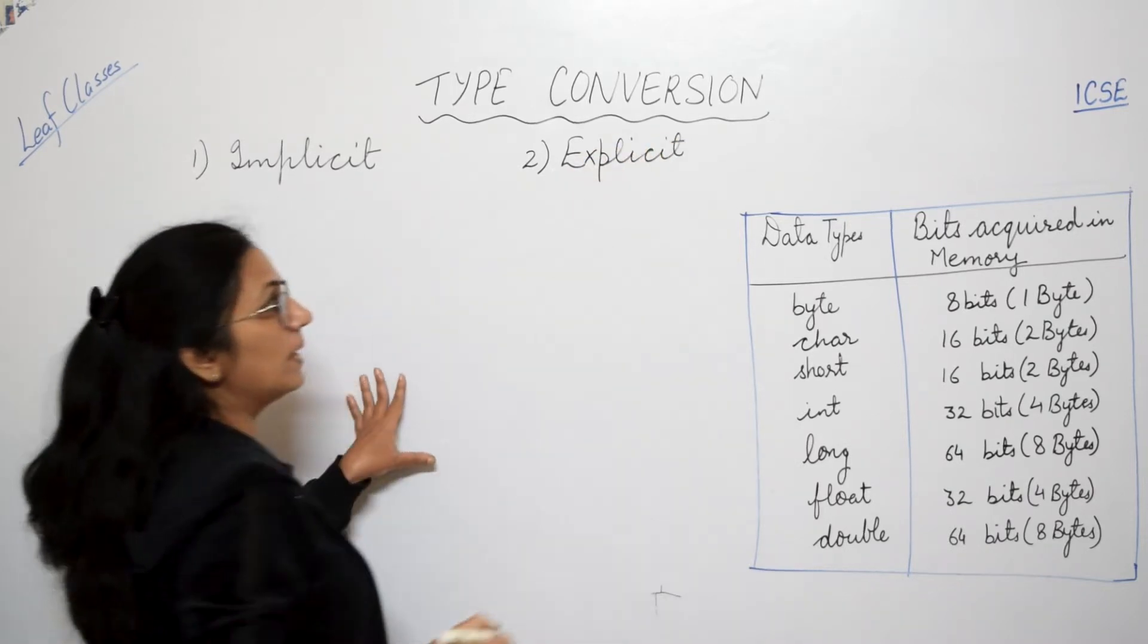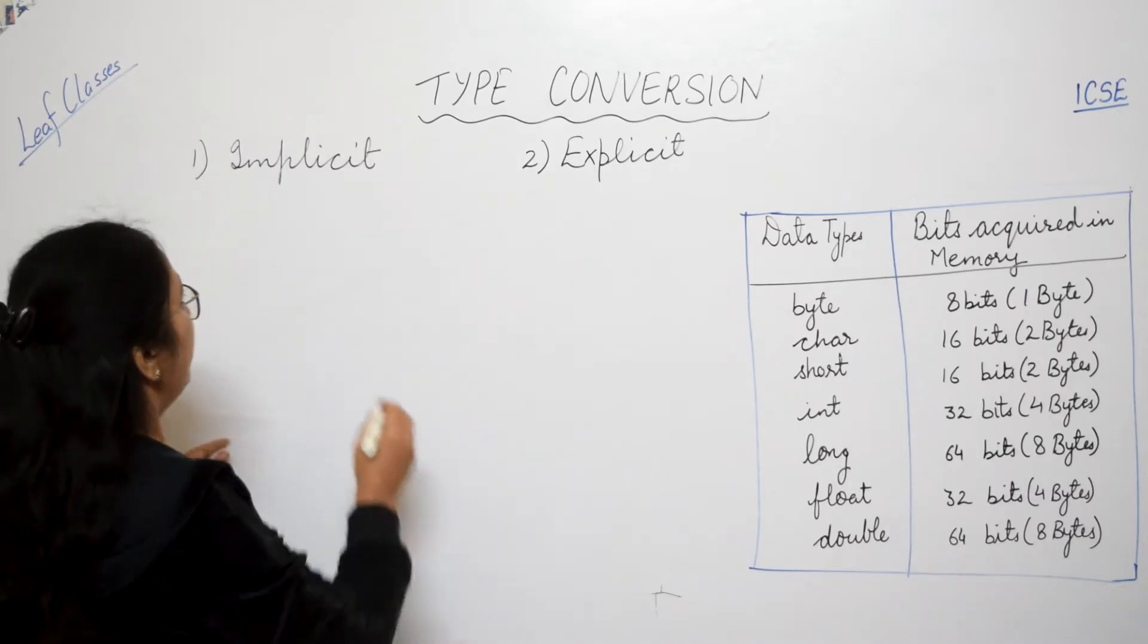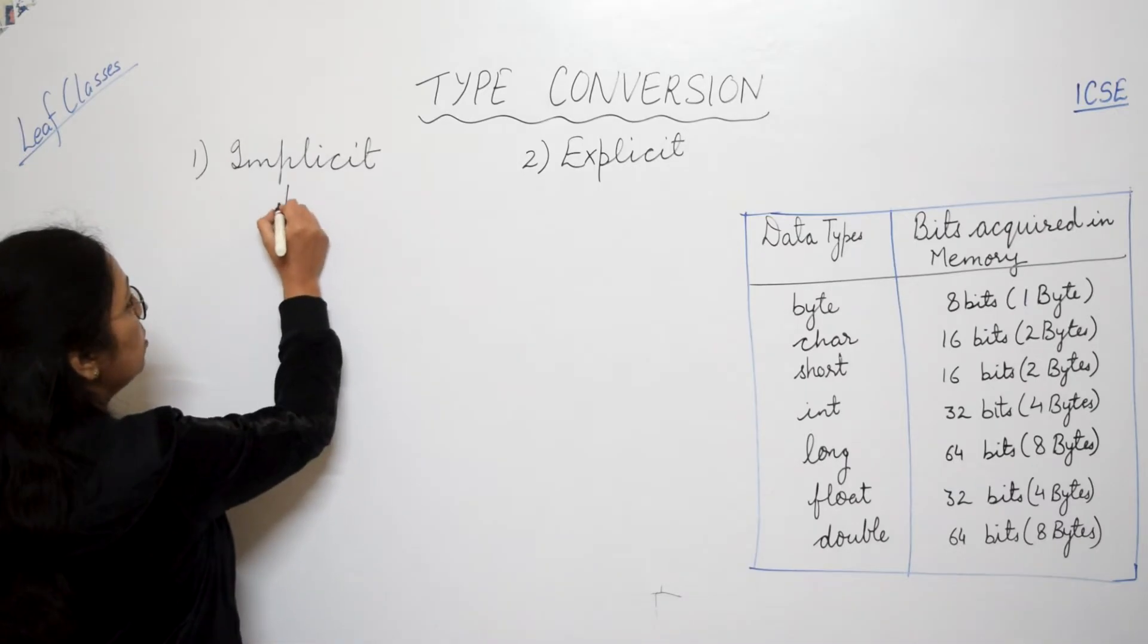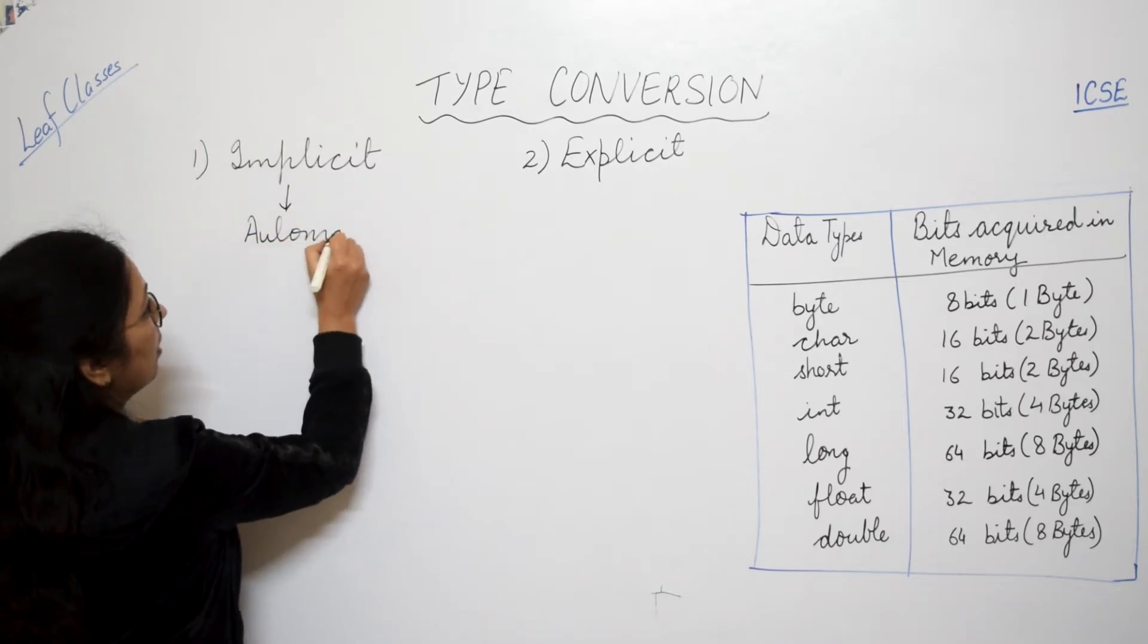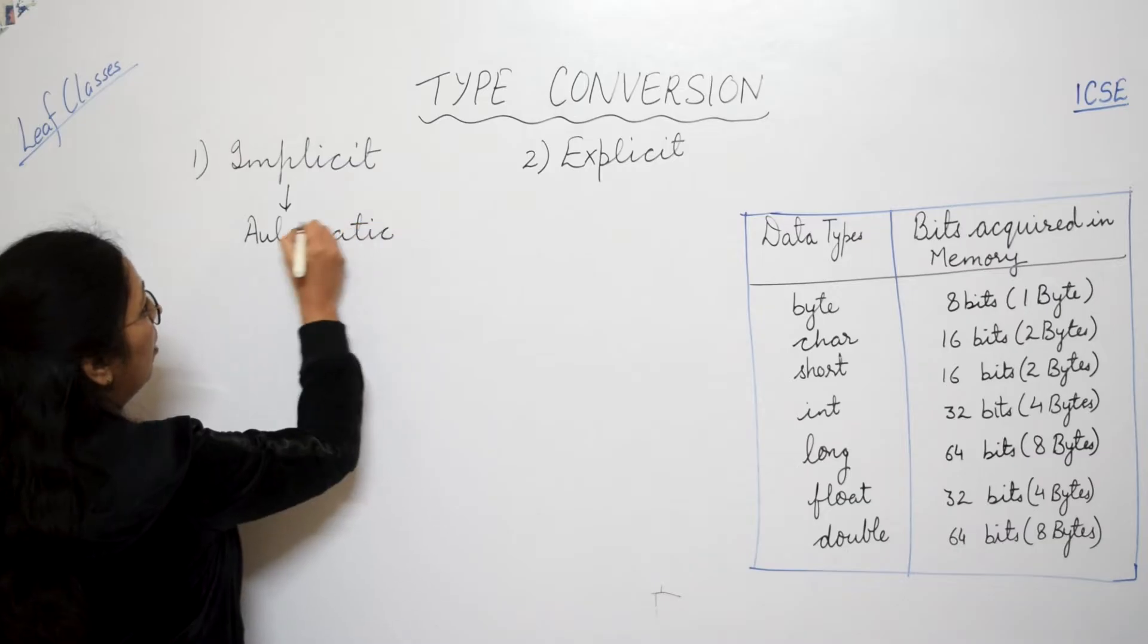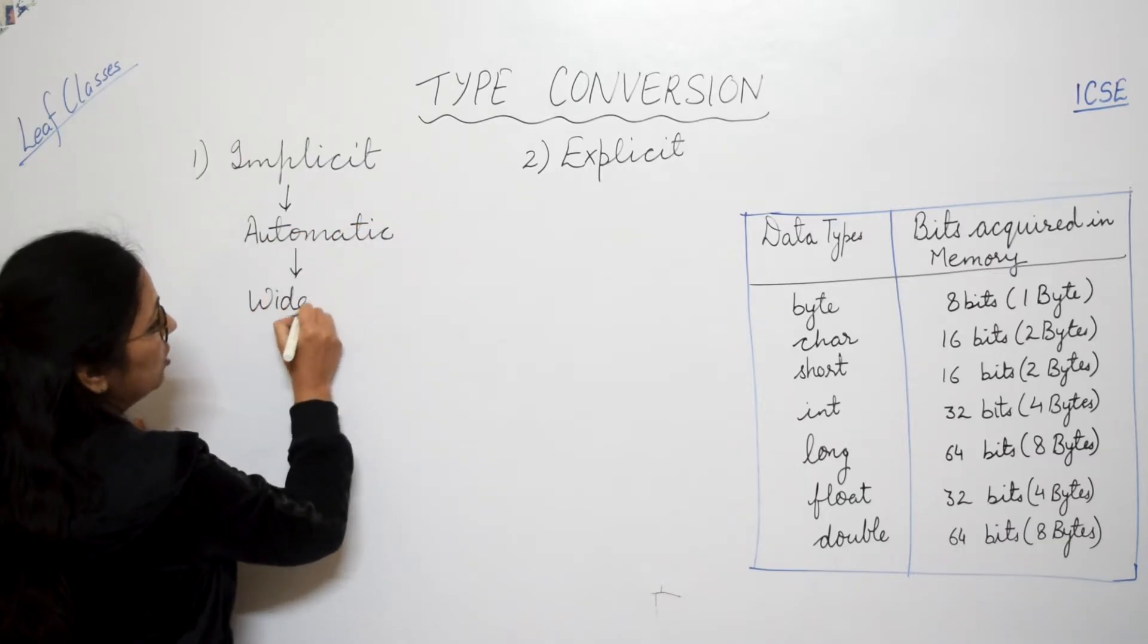Implicit conversion. Children, I suppose all of you are familiar with these words. Implicit conversion is also known as automatic conversion or widening conversion also.